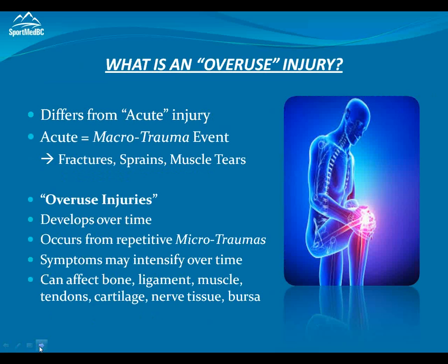An overuse injury is something that differs quite a bit from an acute injury. Our acute injuries are these one-time macro-trauma events — a real excessive force that causes tissue failure, essentially. So we're looking at fractures, sprains to ligaments, tears of muscle. This is something that happens with a lot of force and generally it's an injury that's going to cause tissue failure and keep us out of sport for about six weeks while the tissue repairs.